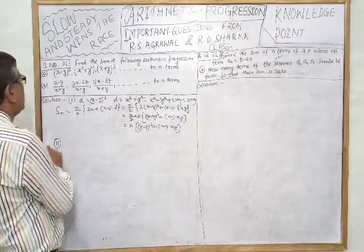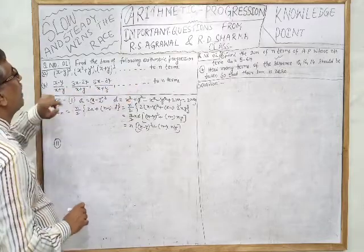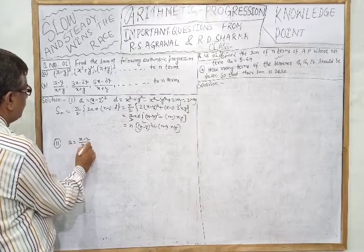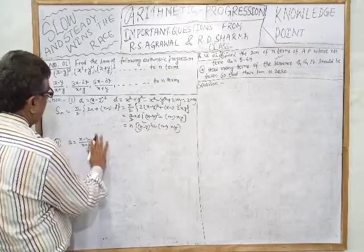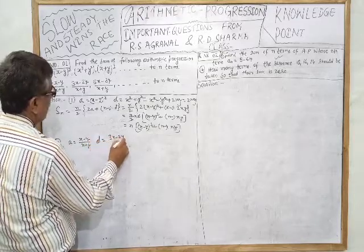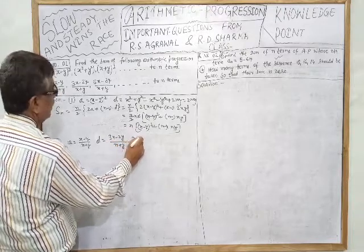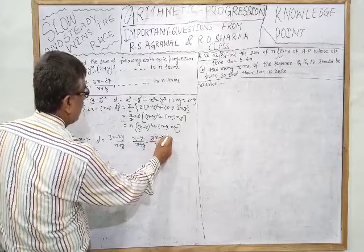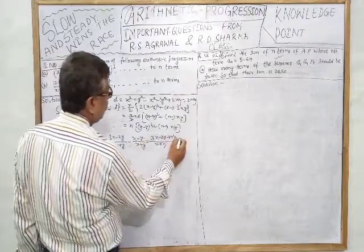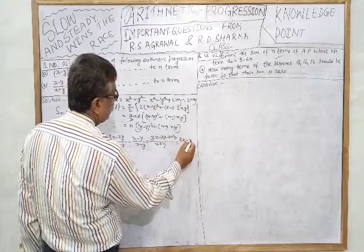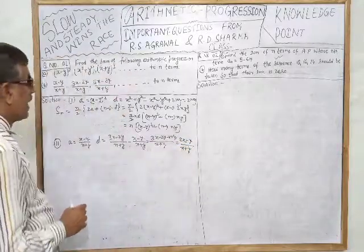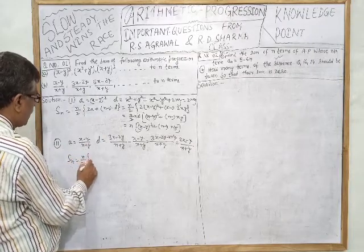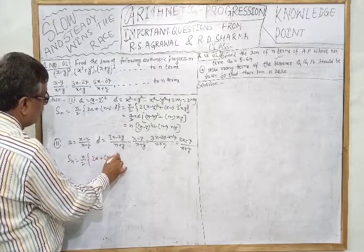Second question: the AP has terms x-y/x+y, 3x-2y/x+y, 5x-3y/x+y up to n terms. The first term a = (x-y)/(x+y). The second term is (3x-2y)/(x+y), with the same denominator. We use the formula Sn = n/2 × [2a + (n-1)d].